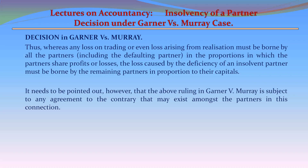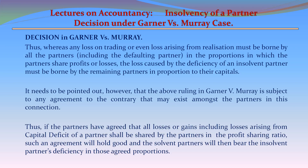It needs to be pointed out that the ruling in Garner vs. Murray is subject to any agreement to the contrary that may exist among the partners. Thus, if the partners have agreed that all losses or gains, including losses from the capital deficit of a partner, shall be shared in their profit-sharing ratio, such an agreement will hold good and solvent partners will bear the insolvent partner's deficiency in those agreed proportions.